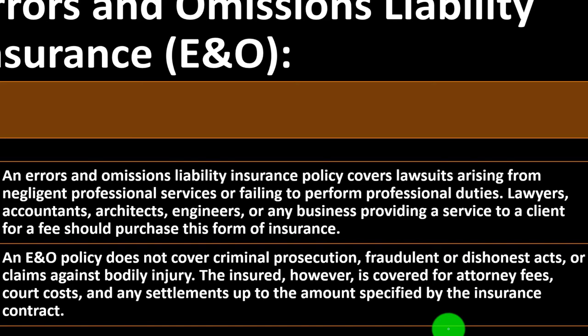The E&O policy does not cover criminal prosecution, fraudulent or dishonest acts. When thinking about this insurance, you're not buying armor to act dishonestly or cause intentional harm — that's not the idea. Unfortunately, when people feel insured they may act more recklessly than they otherwise would. The intent is that you're trying not to get sued, trying not to cause harm, and you want the insurance in the event that harm occurred despite your due diligence.